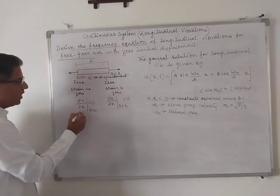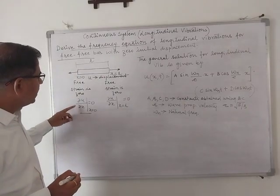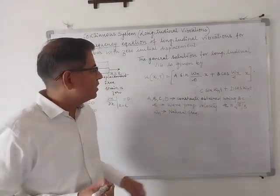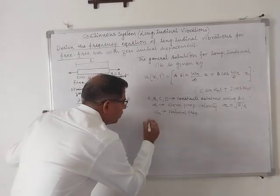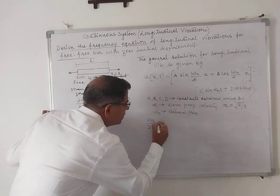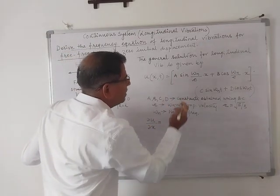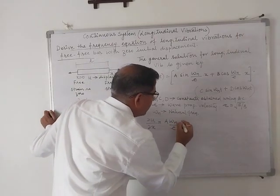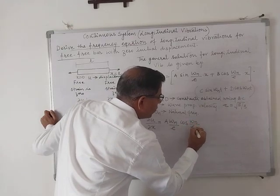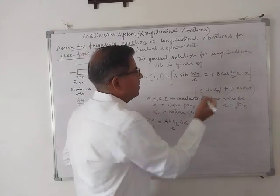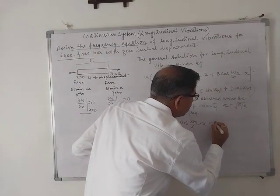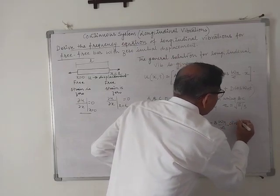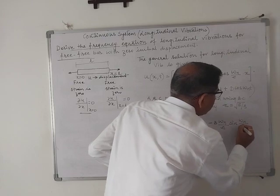Now we apply the boundary conditions. The first boundary condition is ∂u/∂x = 0 at x = 0. We differentiate the general equation with respect to x: ∂u/∂x = [A·(ωn/c)·cos(ωn/c · x) − B·(ωn/c)·sin(ωn/c · x)] × [C sin(ωn t) + D cos(ωn t)].